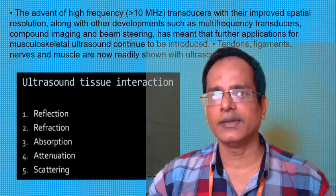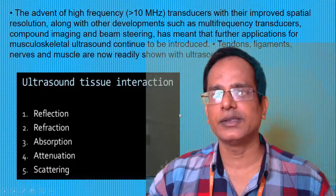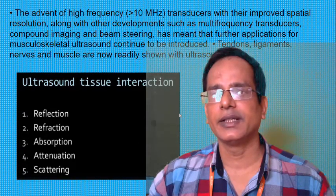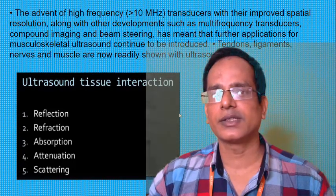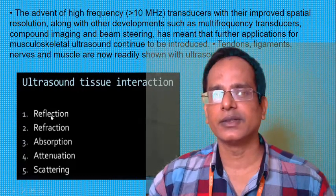The advantage of high frequency — using above 10 MHz — is improved spatial resolution, generated by the transducer. Developments such as multi-frequency transducers, compound imaging, and beam steering have further extended the applications of musculoskeletal ultrasound. Tendons, ligaments, nerves, and muscles can now be shown by ultrasound.